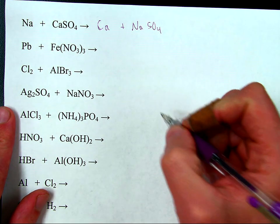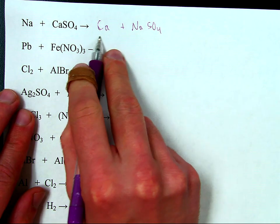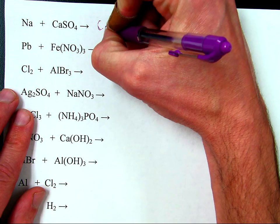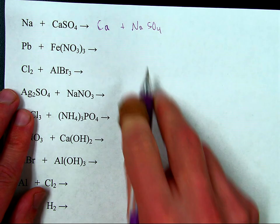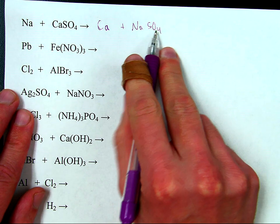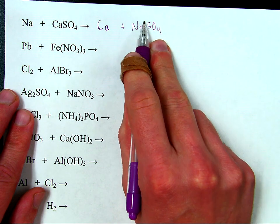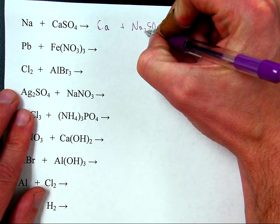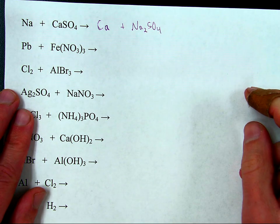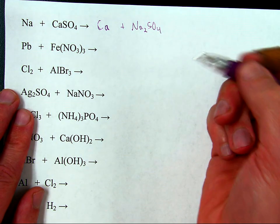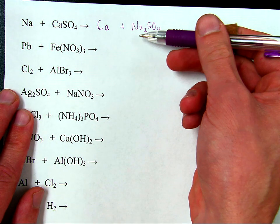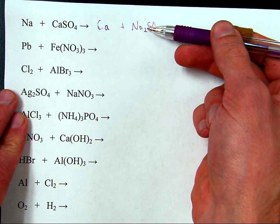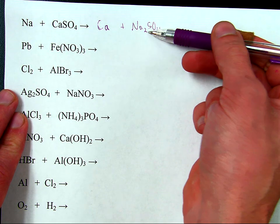Step two: fix the formulas. Calcium by itself is just Ca, so we leave it as is. Then sodium with sulfate — sulfate is a two minus, sodium is a one plus. So the correct formula for sodium sulfate is Na2SO4. That was part two — I have fixed the formulas.